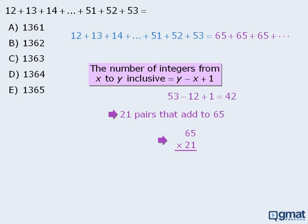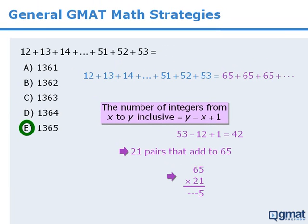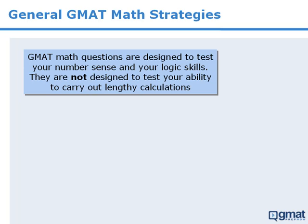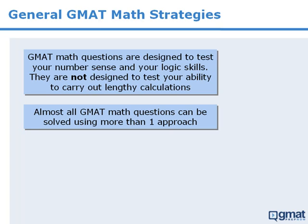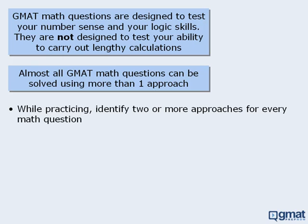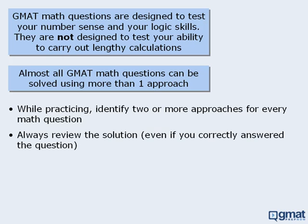So at this point we can find our answer by multiplying 21 by 65, or we can recognize that if we did multiply 21 by 65, the units digit of our product would be 5, and since only one answer choice has a units digit of 5, then this must be the correct answer. The important takeaways of this lesson are that you should not have to perform a lot of calculations on most GMAT math questions, and almost all questions can be solved using more than one approach. So while you're practicing, you should always try to identify at least two approaches to every question, and be sure to review the solutions to every question, even if you answered it correctly — there's always a chance that you will learn a faster way to solve the question.